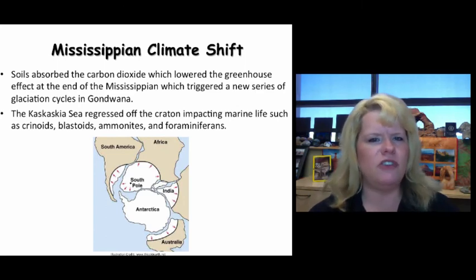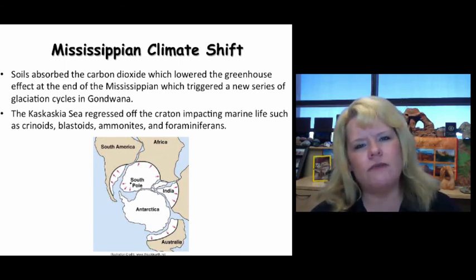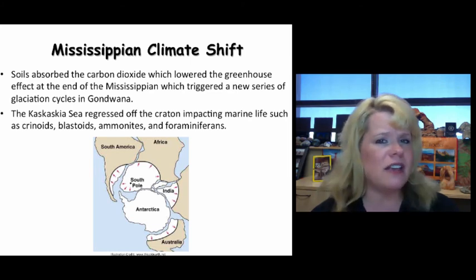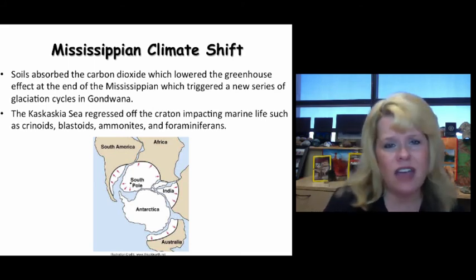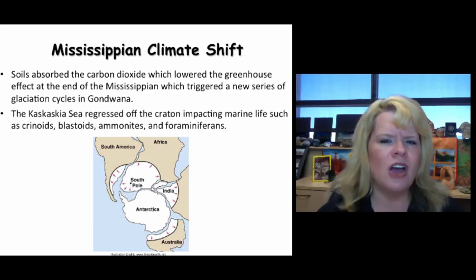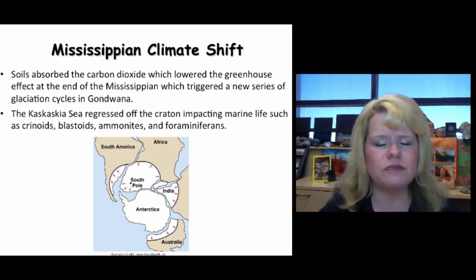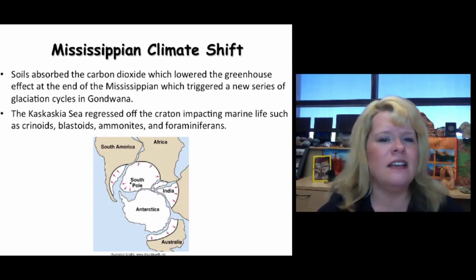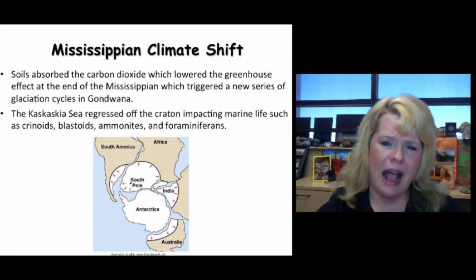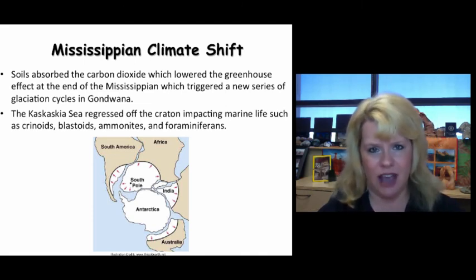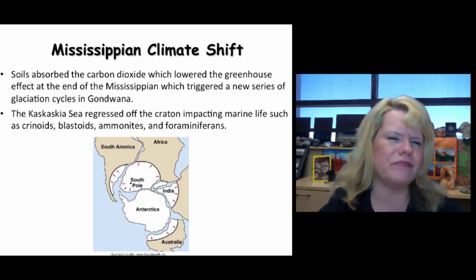There was a Mississippian climate shift at the end of the period. We had a bunch of soil by now — think back to the Devonian when soils evolved, and now we've had tens of millions of years of development of soils across the world, especially in areas that never had the epeiric seas of the Kaskaskia invade. Soils absorb carbon dioxide, which actually lowered the greenhouse effect and caused a new series of glaciation to occur in Gondwanaland. We would see the Kaskaskia Sea begin to regress and fully regress by the end of the Mississippian.